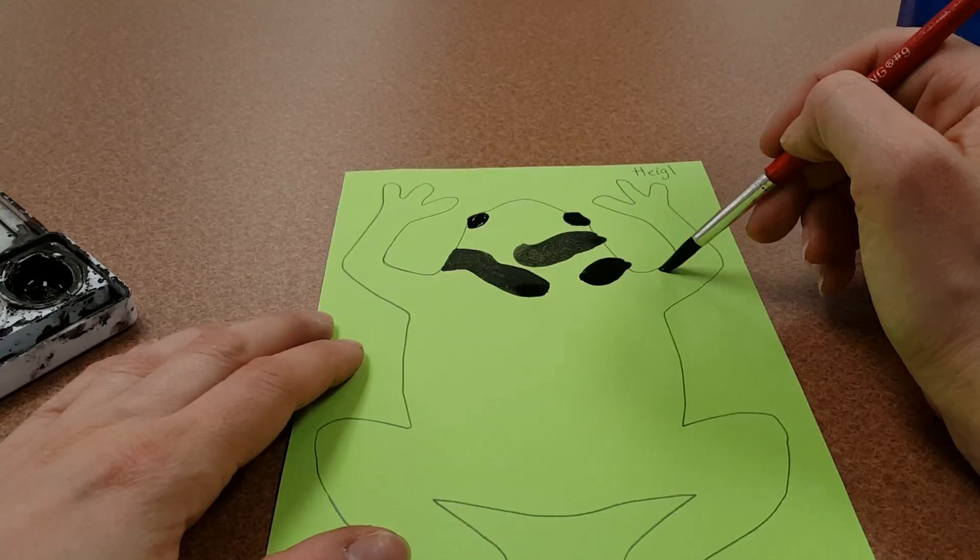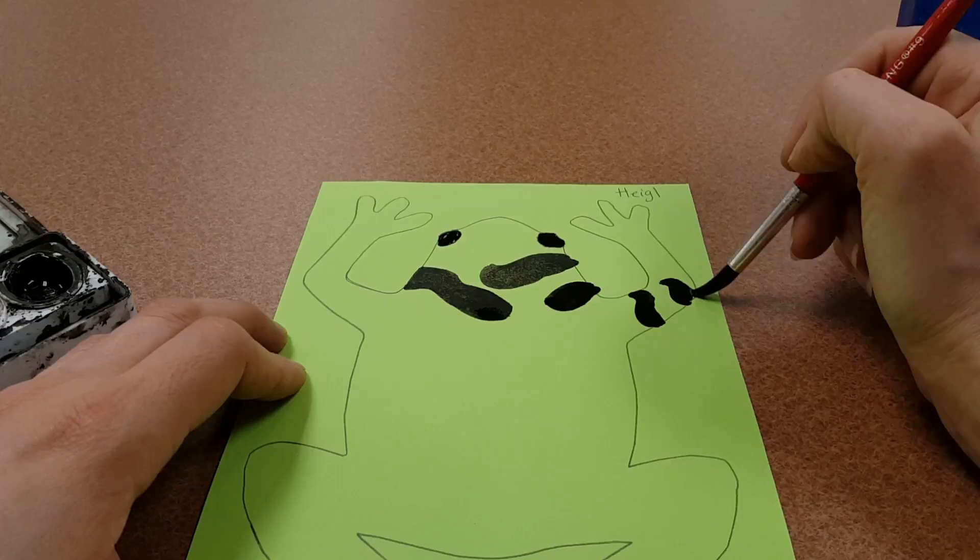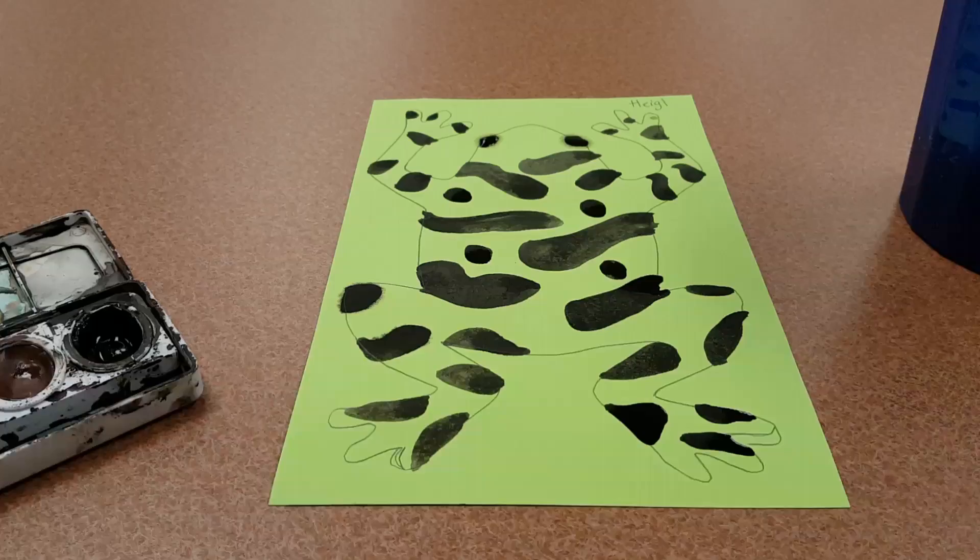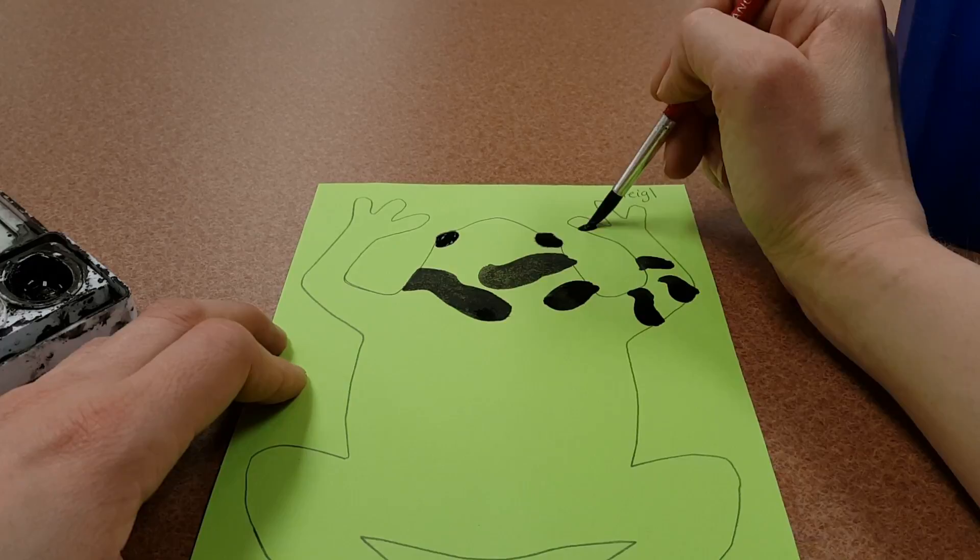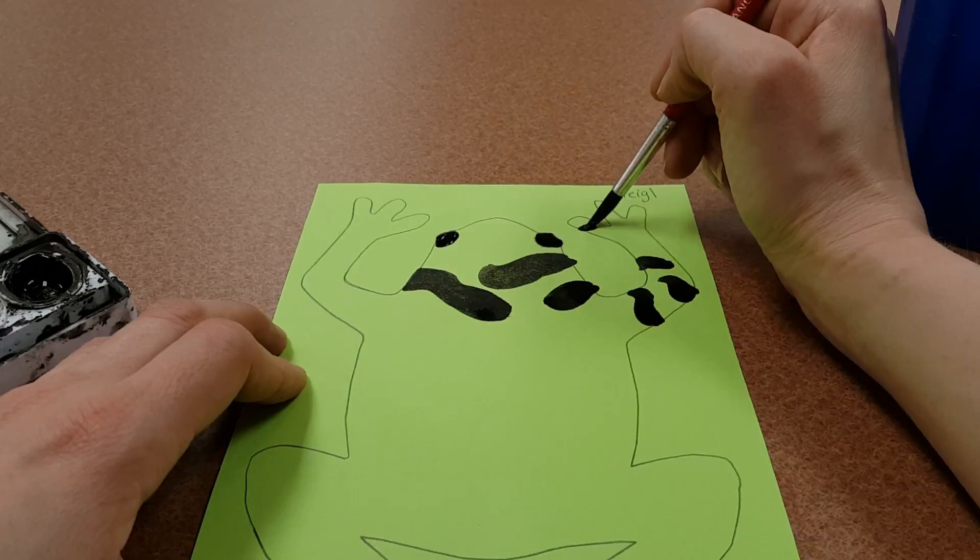Also, we need to still see these pencil lines. So when you're painting, be careful that you don't paint over them because we have to see them so we can cut it out next time we come. And you can even paint in little toesies, his little legs.